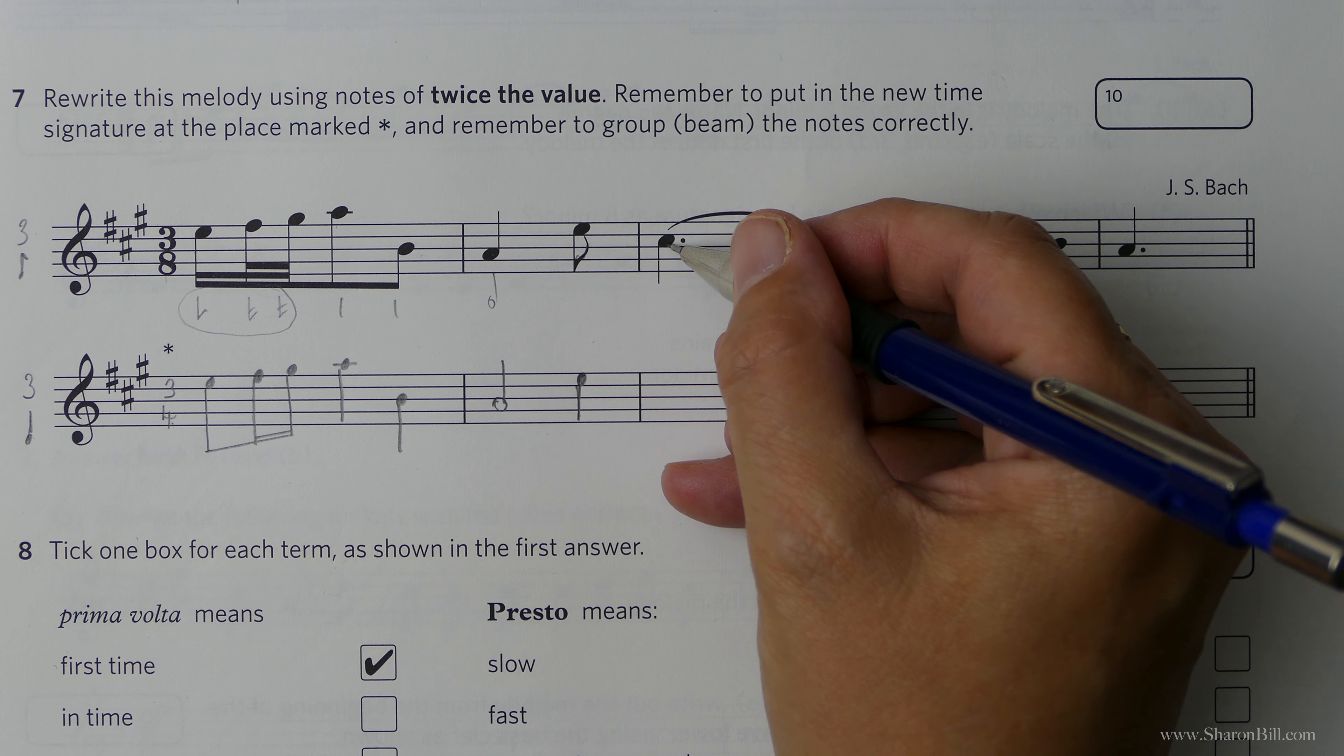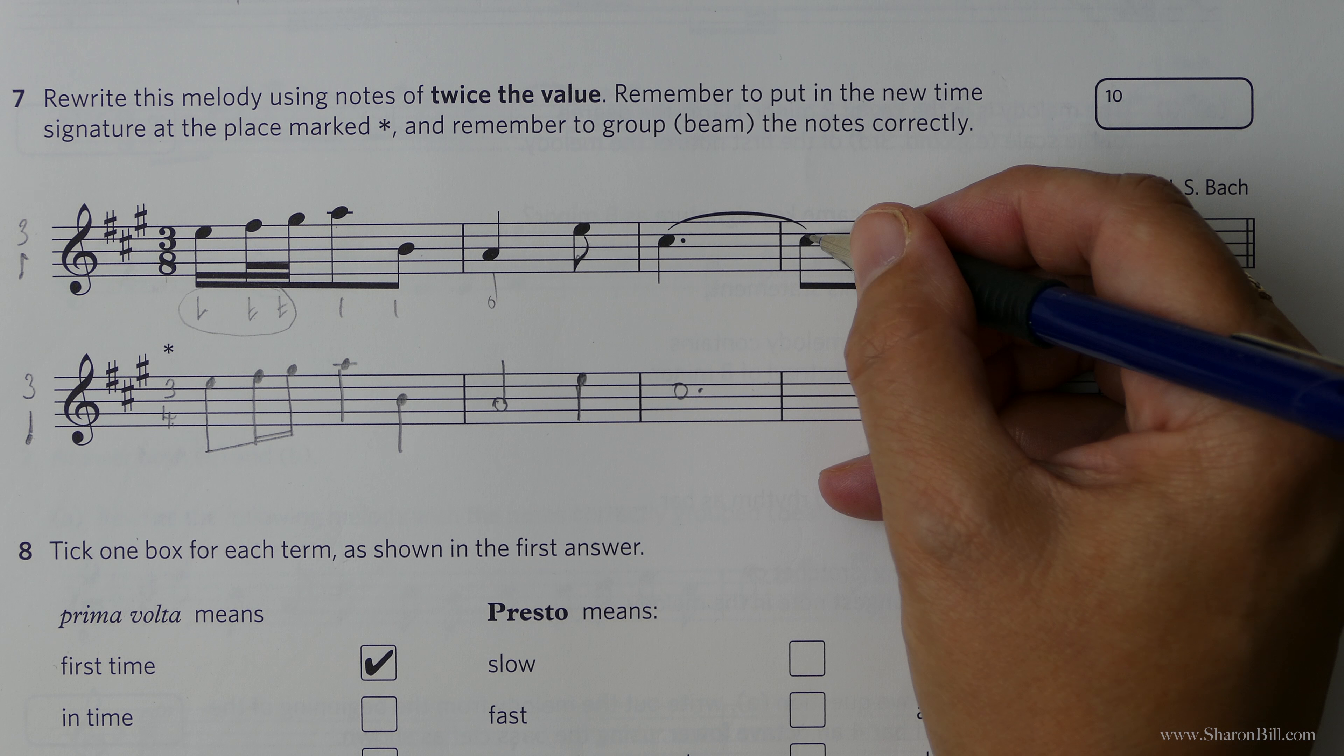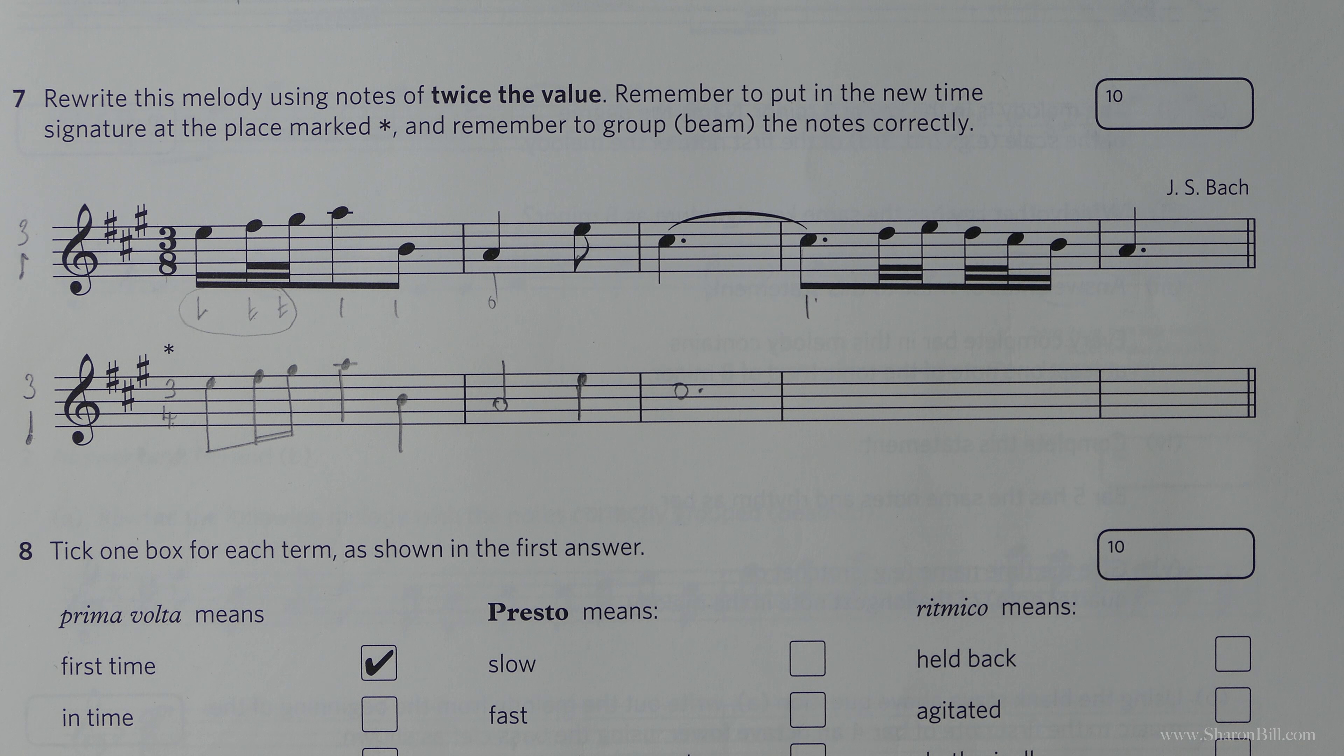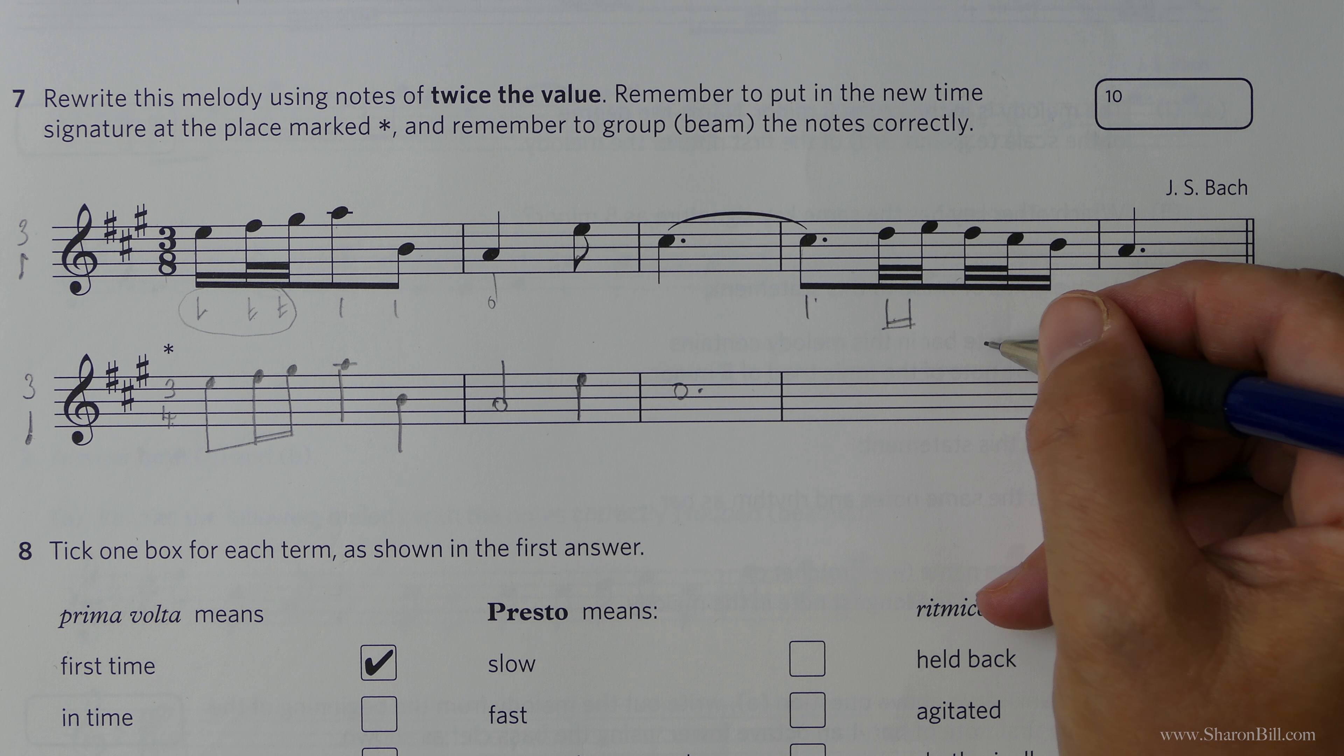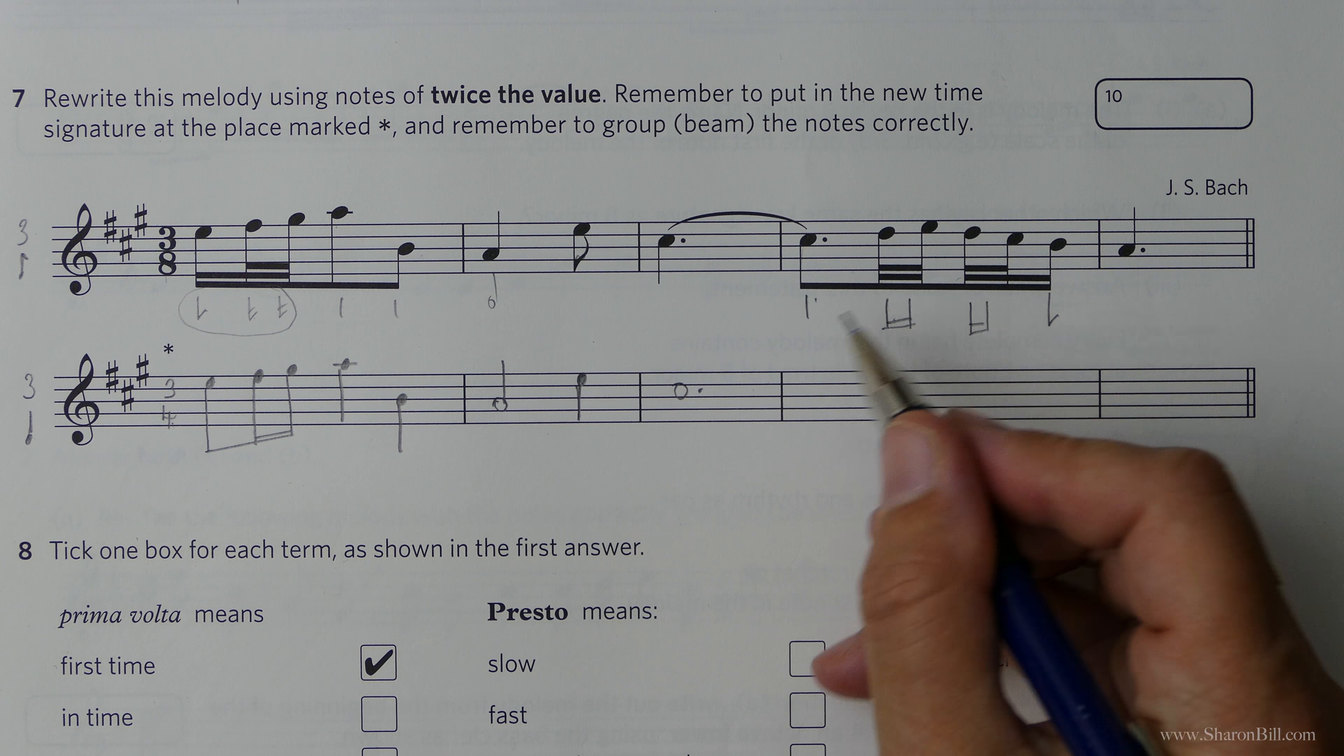This, at the moment, is a dotted crotchet, dotted quarter note, so that will become a dotted minim, which we will tie to this one here. So let's look at what we're going to be doing here. This is a quaver at the moment, an eighth note, so that becomes a crotchet with a dot. So here we've got three beams, so we just change that to two beams, so they become semiquavers, sixteenth notes. This semiquaver, this sixteenth note, becomes a quaver, an eighth note.